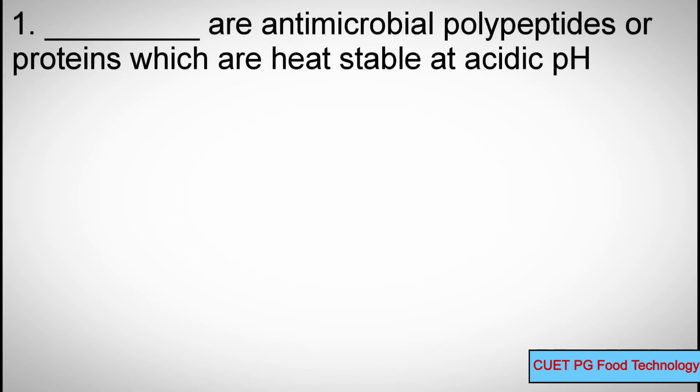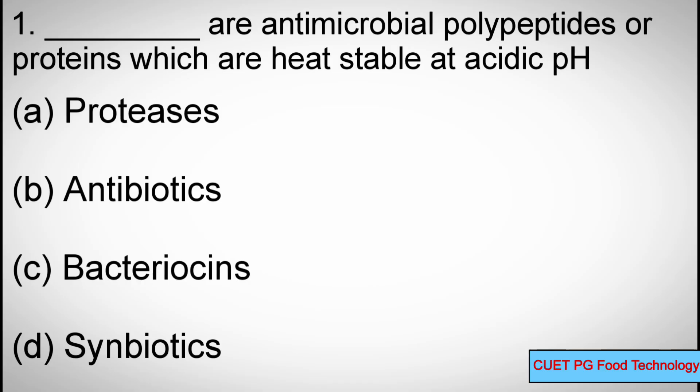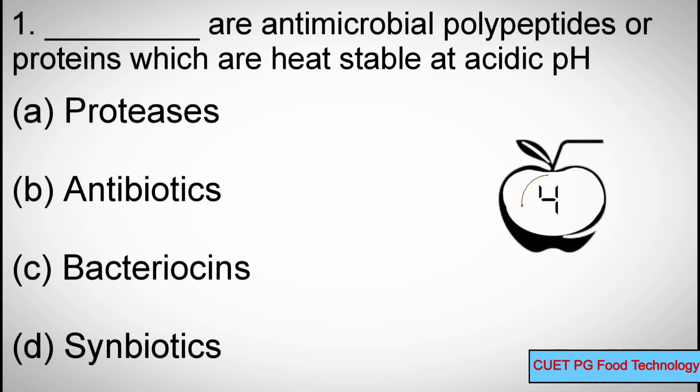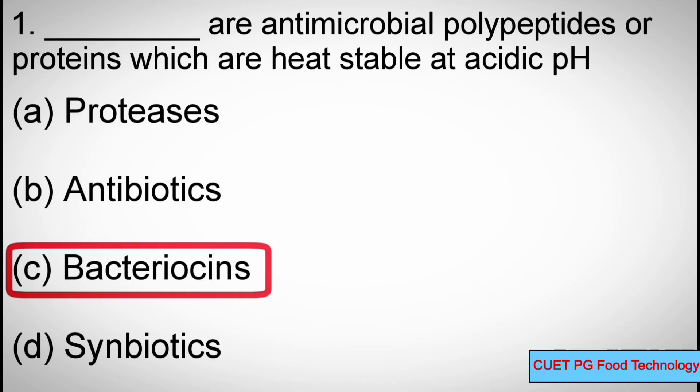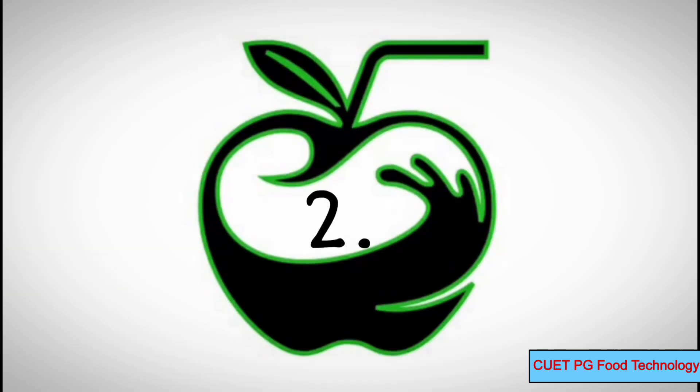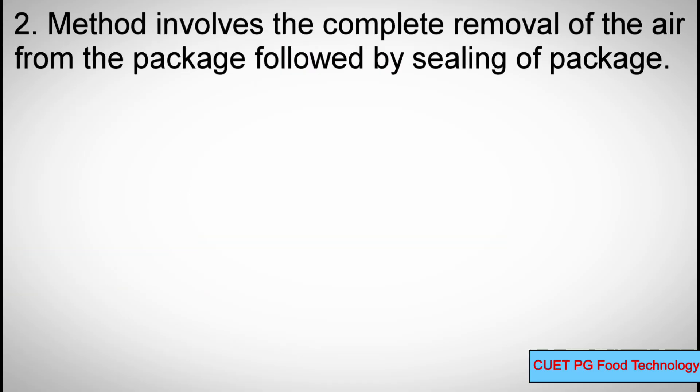Question number one: Dash are antimicrobial polypeptides or proteins which are heat stable at acidic pH. Options: A) Proteases, B) Antibiotics, C) Bacteriocins, D) Symbiotics. Correct answer: C) Bacteriocins.